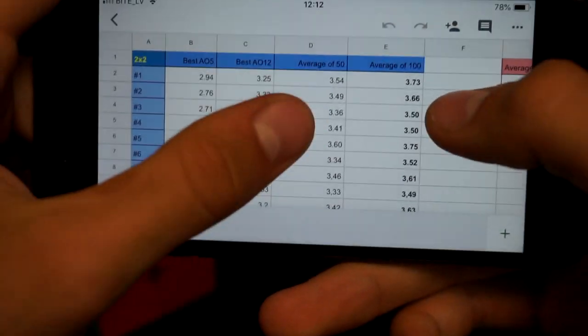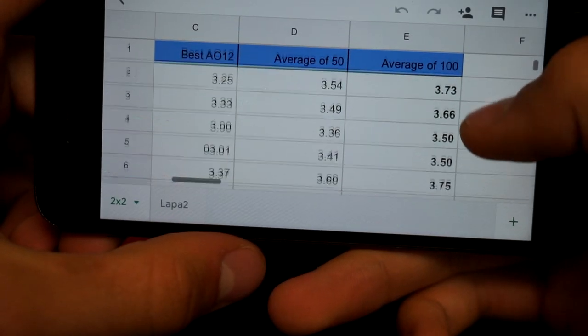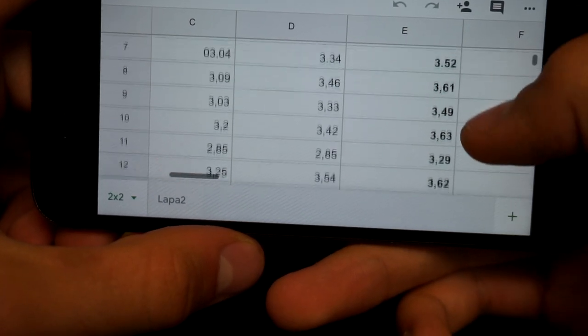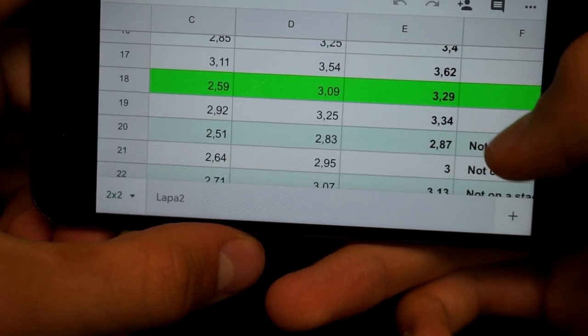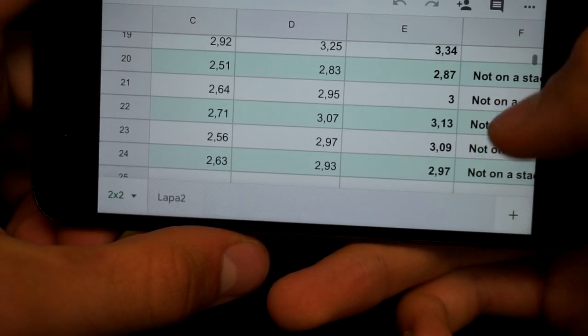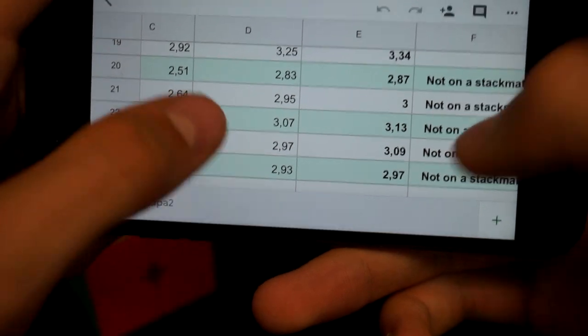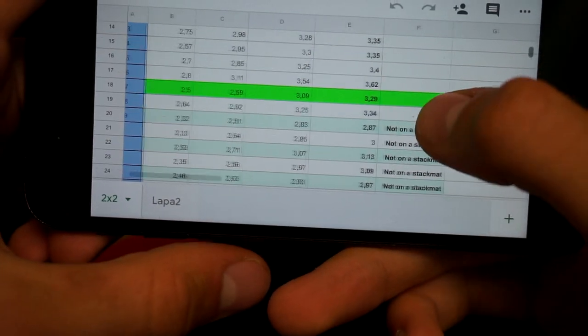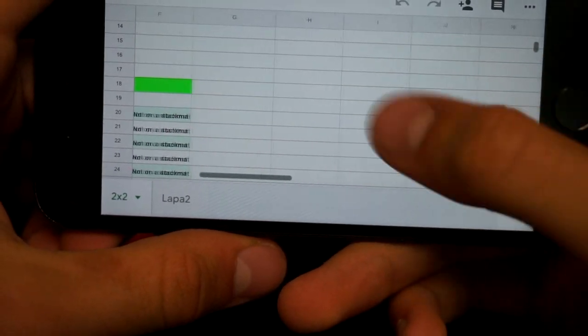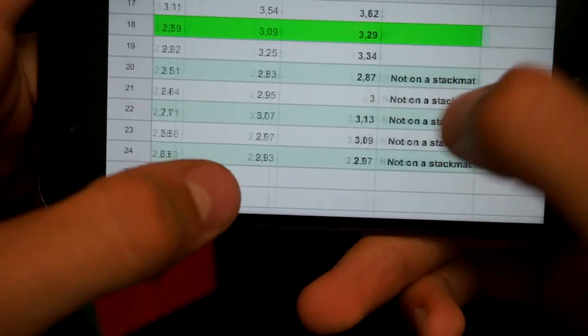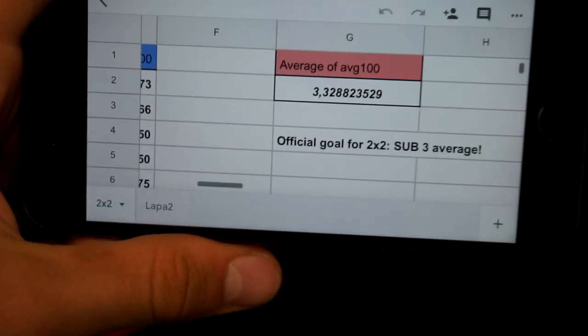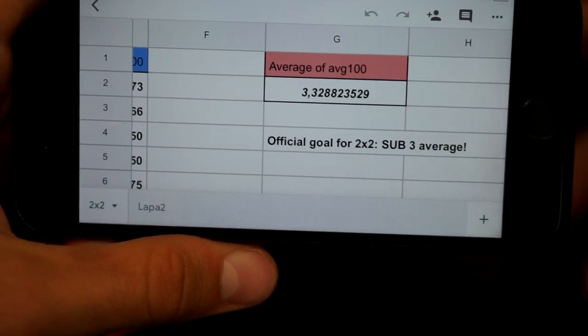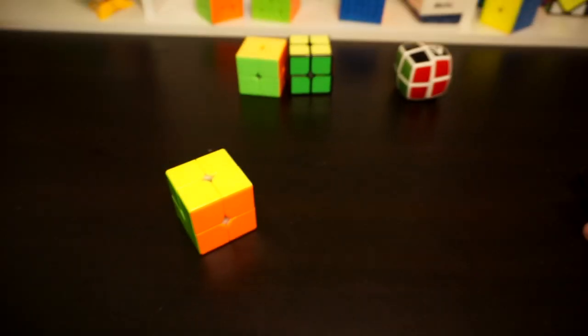As you can see, my times were improving by a little, but they were. And as you can see, my best average of 100 was sub 3, but that was not on the stack mat. So here we can see, I had done like 1900 solves and my average of 100 averages were 3.3, which is quite good. As you can see, you need to practice a lot of 2x2.